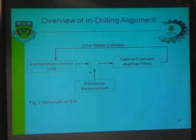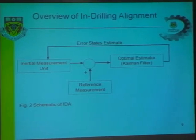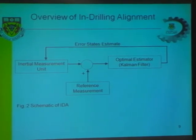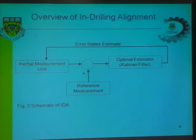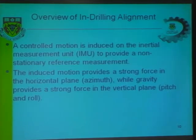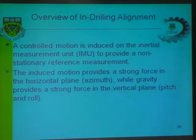The in-drilling alignment algorithm can be performed within the drill string when the drill bit is idle, and is generally based on the simple concept of optimal estimation, also known as Kalman filtering. This is our inertial measurement unit, but this is the reference measurement that we obtain by inducing controlled motion downhole. The controlled motion provides a non-stationary reference measurement, which mathematically can be used to compensate for error accumulation in the drilling process.